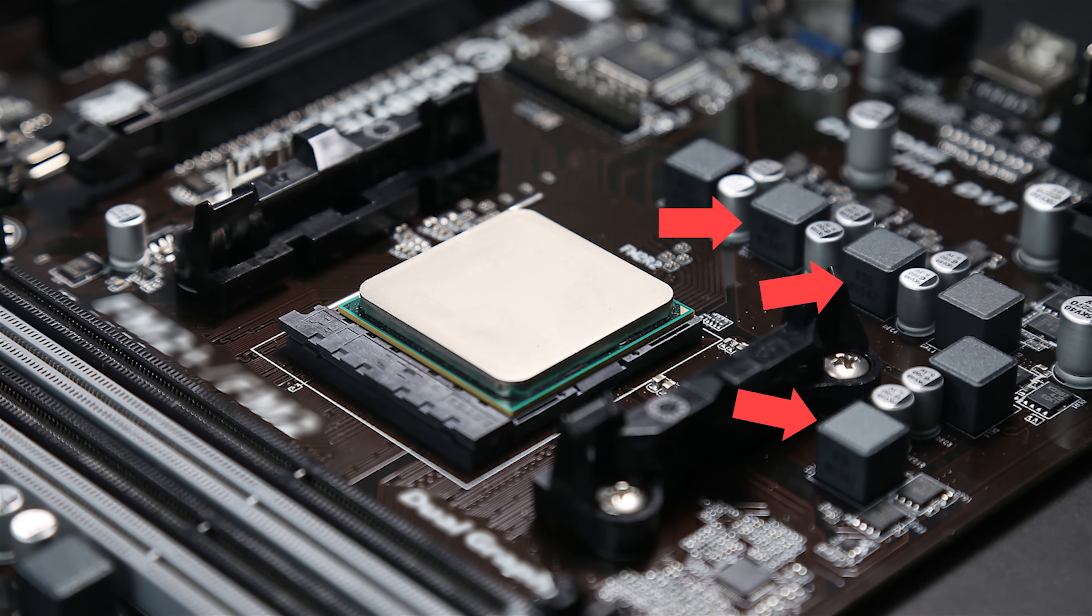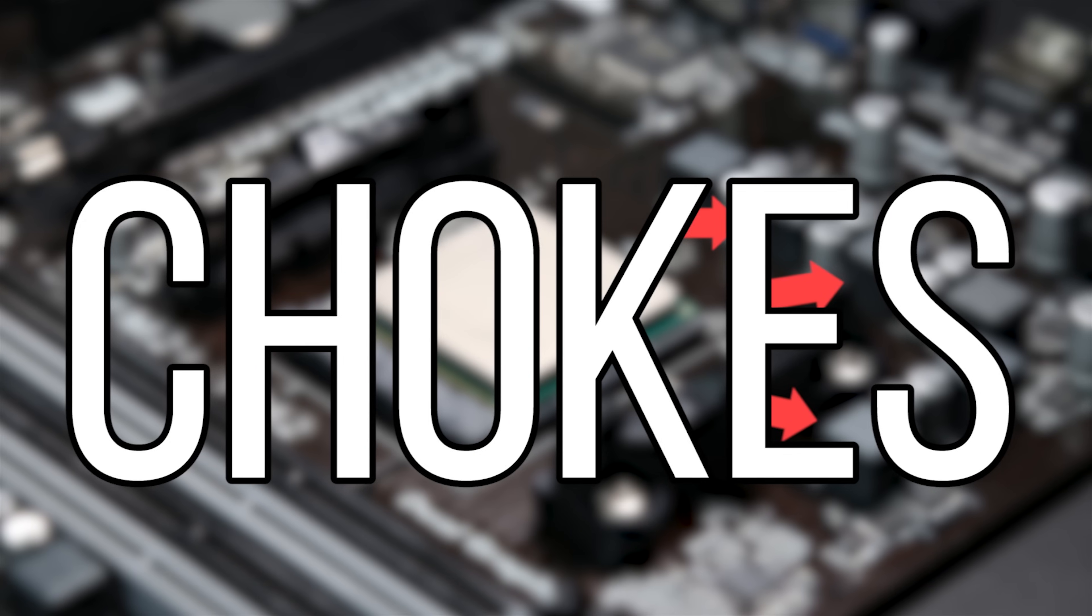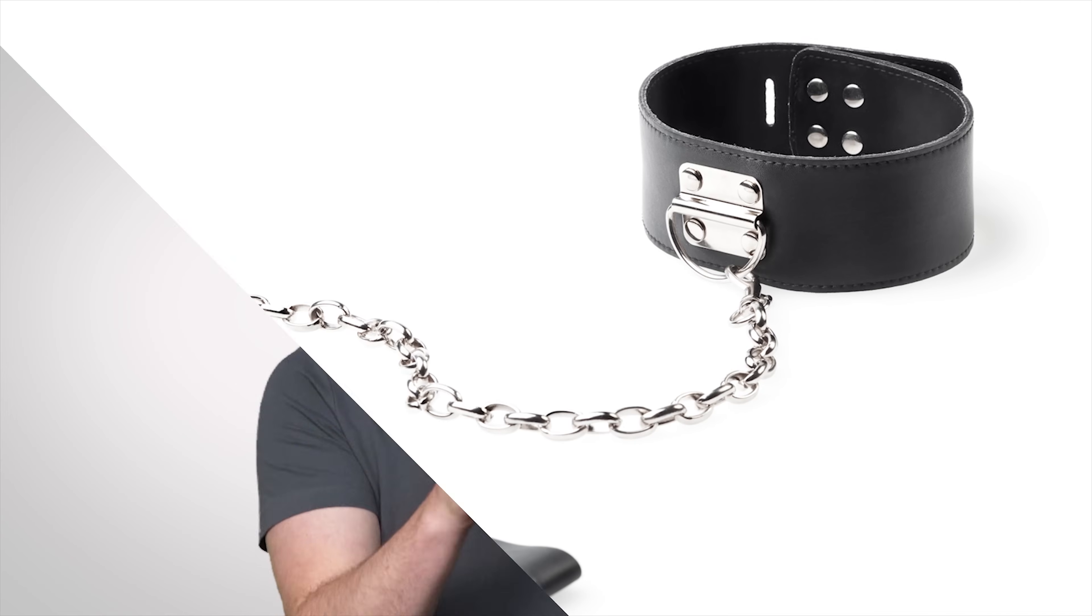Okay then, but what about all those blocky things near my CPU? They don't look like capacitors or resistors. Well, you'd be right. These are called chokes, which, don't get too excited. They're a type of inductor.